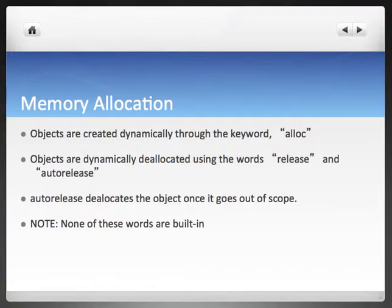Memory allocation. Objects are created dynamically through the keyword allocate. You need to allocate some space for what it is that you're using. On your table, when you're putting stuff down, you need a place for plates, your books, whatever. You're allocating space. A-L-L-O-C means allocate space. Objects are dynamically deallocated using the words release and auto-release. In Xcode 4, you're going to see that some of those releases are necessary. Auto-release deallocates the object once it goes out of scope, freeing up that space right after you're done using it, which is awesome. When an object gets created, it must be deallocated later on. I want to note that none of these words are built in. They're all functions of a root class like NSObject in Cocoa.